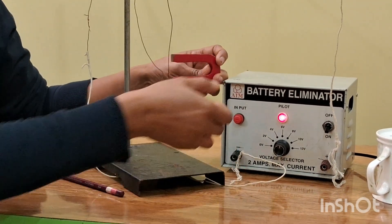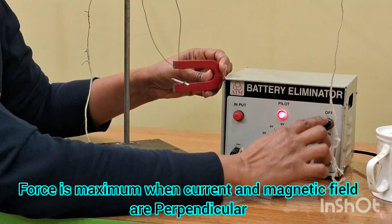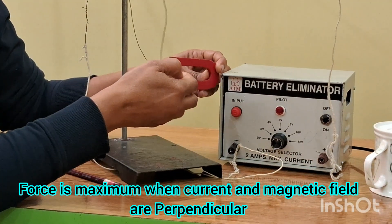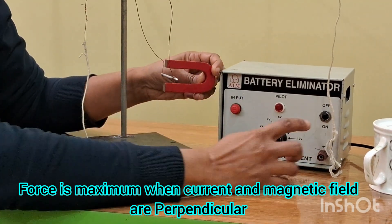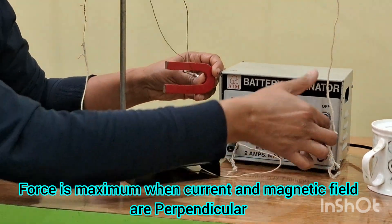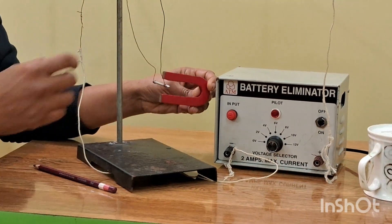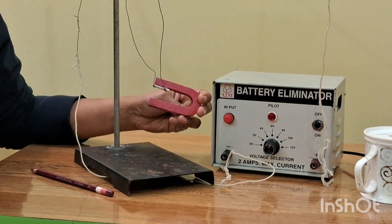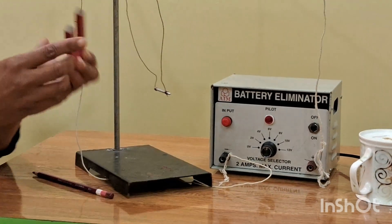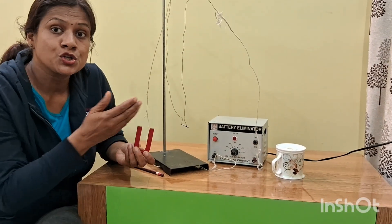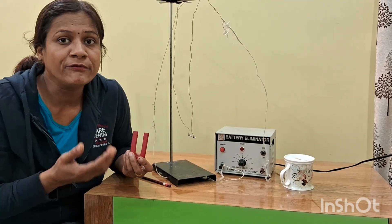But if I place it perpendicular, if I place this wire perpendicular to it, the current flows perpendicular to the magnetic field and the force acts. So very important factor that magnetic field and current should be perpendicular to obtain the maximum force.